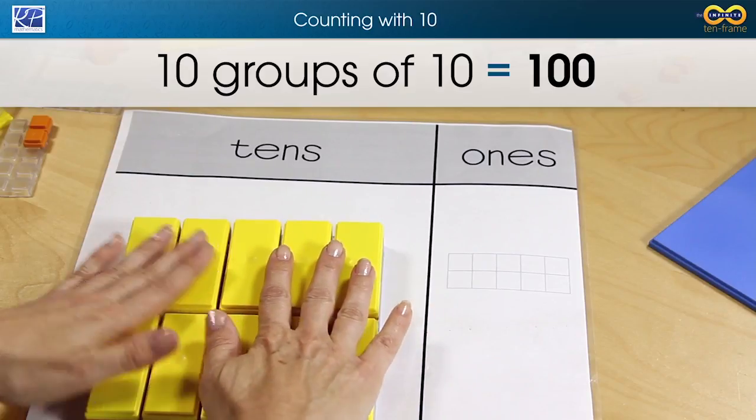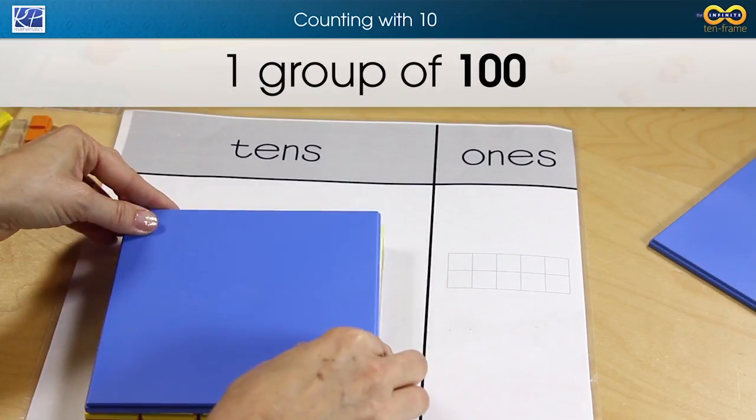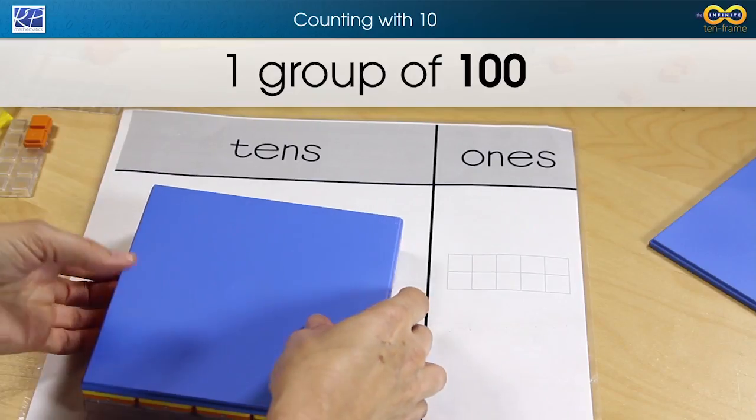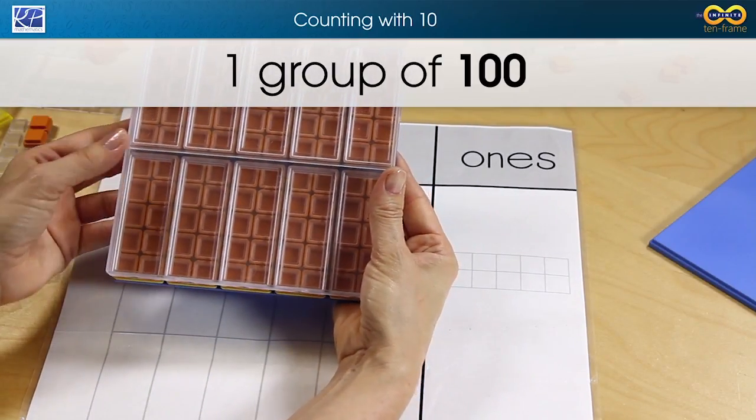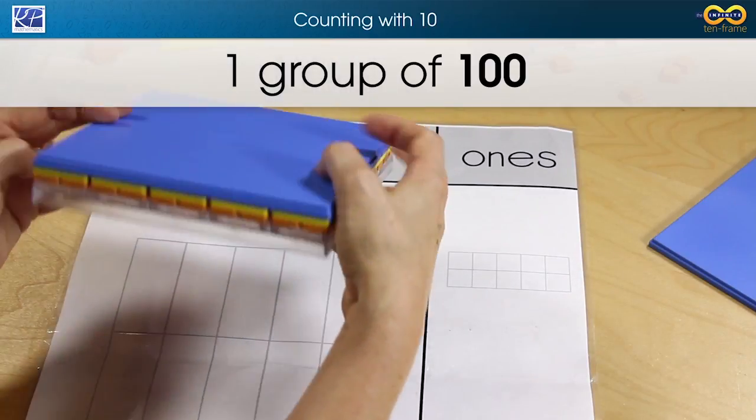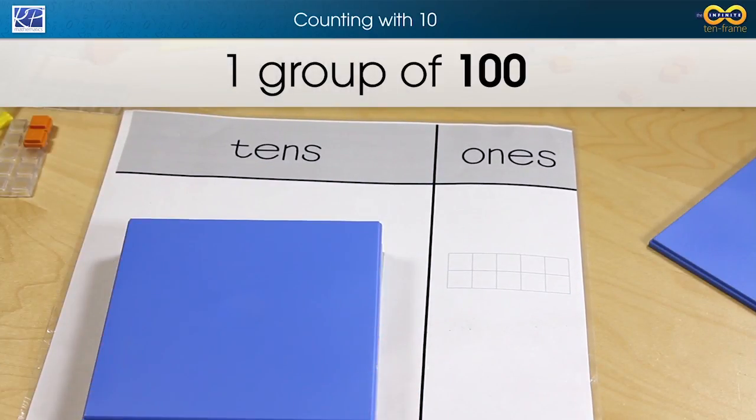Once they've built that they can now create one group of 100. They can look underneath and see that there are still 101 tiles in there but those comprise one group of 100.